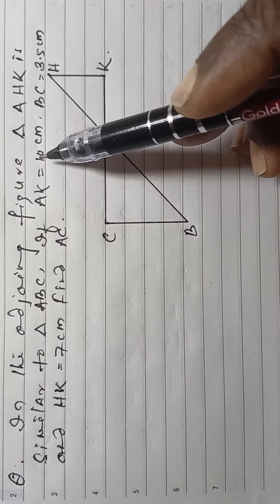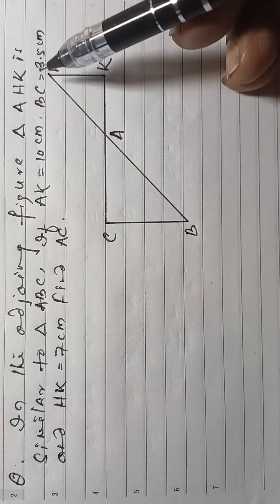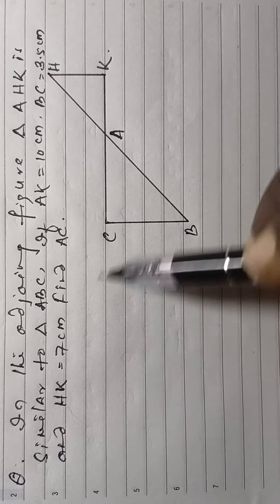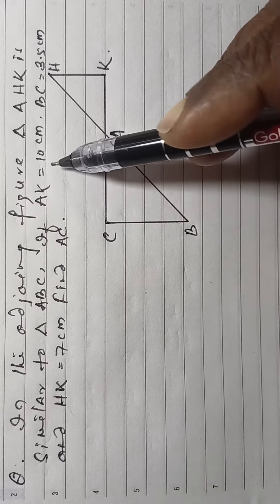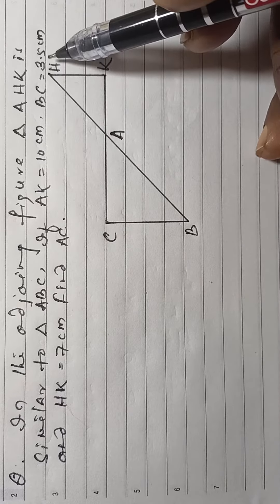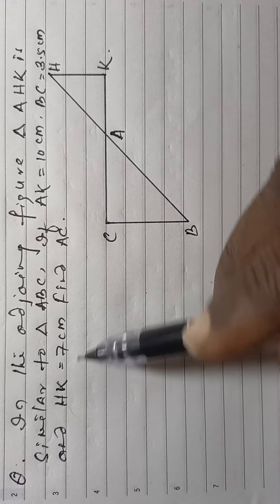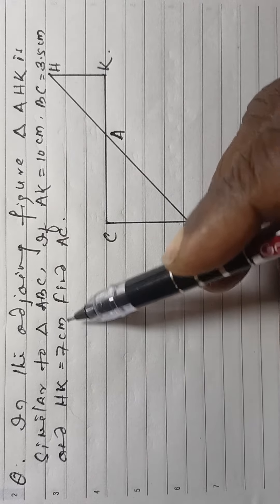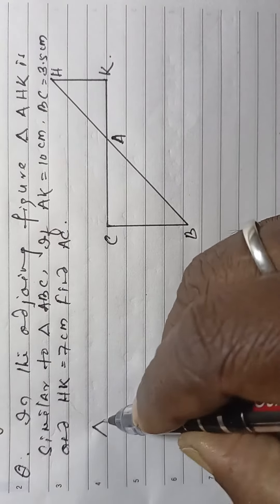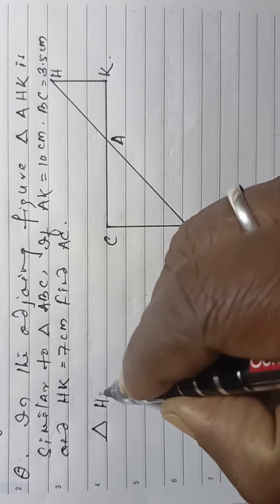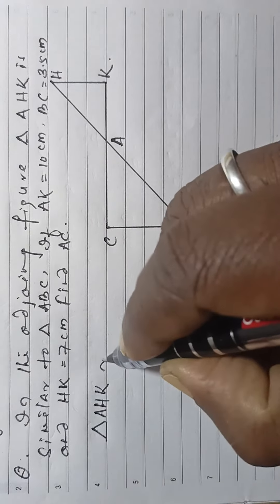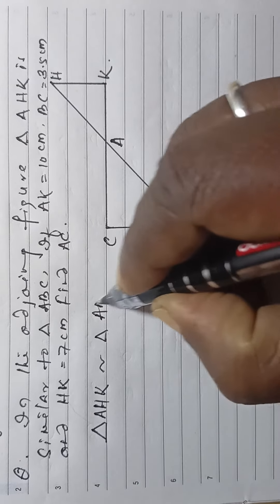In the adjoining figure, triangle AHK is similar to triangle ABC. If AK is equal to 10 cm, BC is equal to 3.5 cm, and HK is equal to 7 cm, find AC. Triangle AHK is similar to triangle ABC.